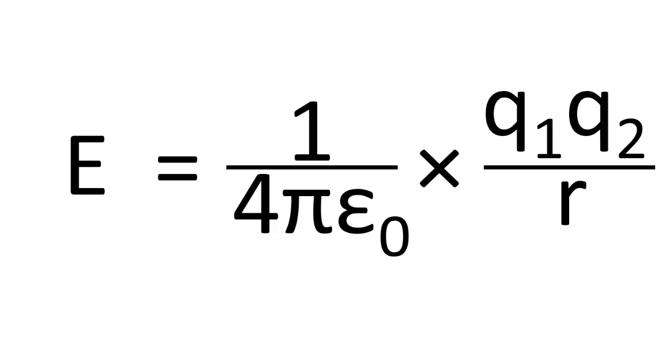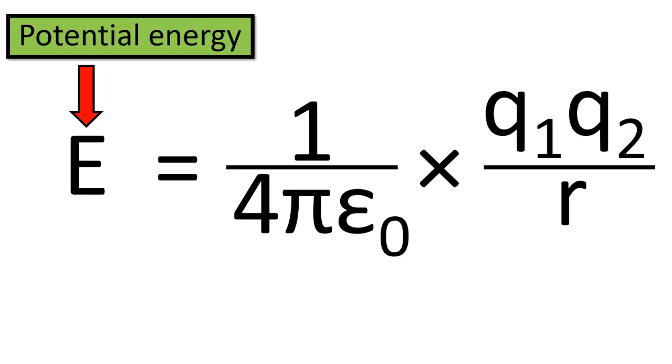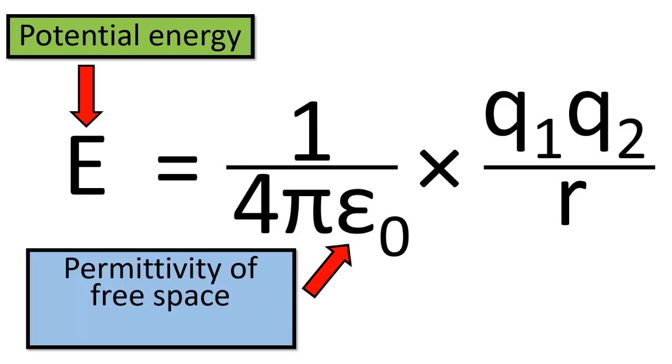A useful way to describe the potential energy associated with interactions between charged particles of atoms is the Coulomb's Law equation, which describes the potential energy of a system composed of two charged particles. It looks like this: E equals 1 over 4π epsilon-naught times Q1 Q2 over R. The E is the potential energy of that system. Epsilon-naught is called the permittivity of free space — you don't really need to know much about it other than that it's a positive constant.